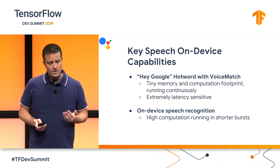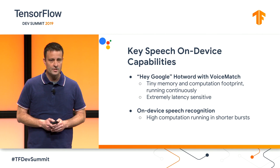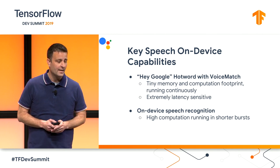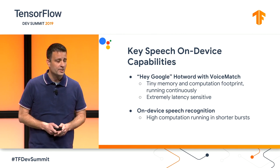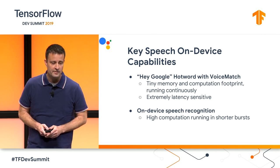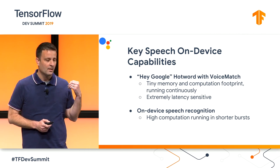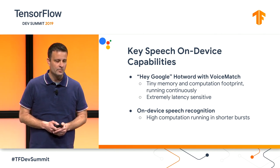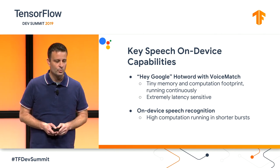Our other major application is on-device speech recognition. We use this often when you're offline or you have a bad network connection. So instead of using the server, we actually run speech recognition on the device. This is kind of on the other end of the spectrum — here we're trying to run large models as fast as possible to get the best possible accuracy. It's a high computational load, typically running in a short burst.